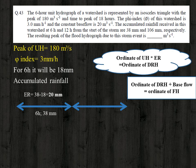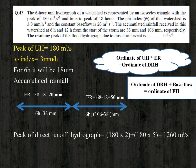For the first 12 hours, the accumulated rainfall is 106 mm, so for the second six-hour period the accumulated rainfall is 106 − 38 = 68 mm. Thus the effective rainfall for the second period is 68 − 18 = 50 mm.